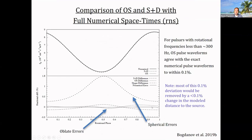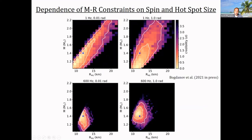Accounting for the oblateness of the star removes a lot of the difference from the exact numerical solution. There are good approximate formulas to account for the oblateness — the radius of the star as a function of colatitude — where the radius is smaller on the poles than on the equator. Regarding the importance of rapid spin: the top two panels show slowly rotating stars, and you can see that a 600 Hz star dramatically constricts the parameter space. In the top panels, you're mostly constraining the mass-to-radius ratio, whereas with a rapidly spinning star you get separate information about mass and radius.